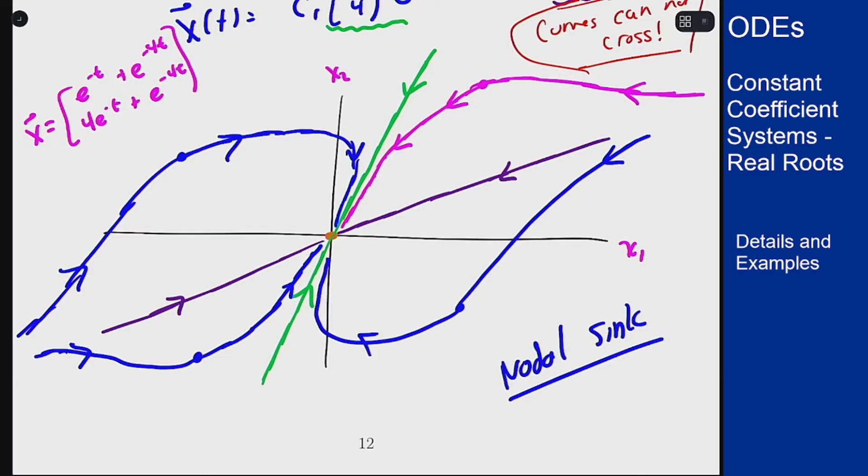Okay, so what's the general process for actually developing and drawing these pictures? Drawing phase portraits, your first step is always to find the straight line solutions. We know there's only one equilibrium solution at zero. With the straight line solutions we're going to find the two of them that correspond to the different eigenvalues and eigenvectors of this matrix.